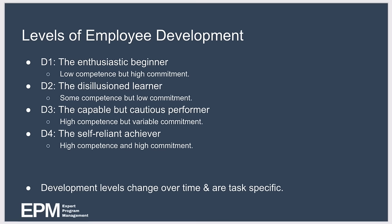Next we have D2, the disillusioned learner. Here your subordinate has some competence but low commitment. They have the skills they need, but for some reason they are unwilling or lack the confidence to perform the task. Maybe the task or the situation is new to them.